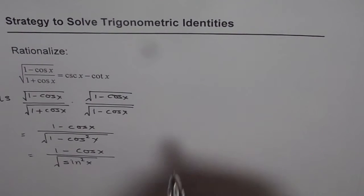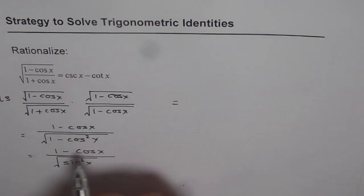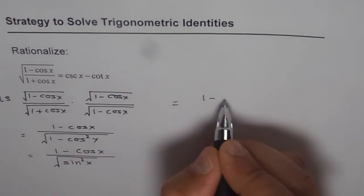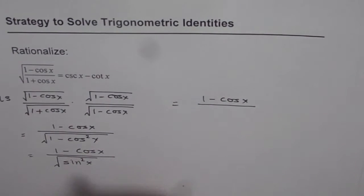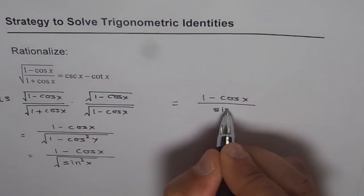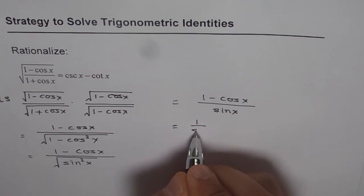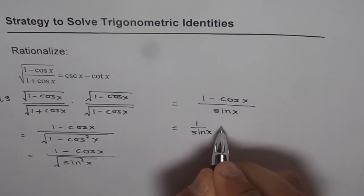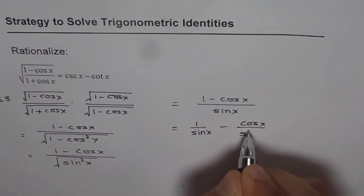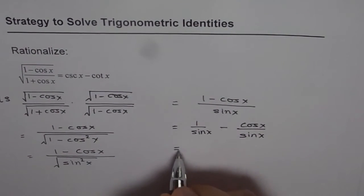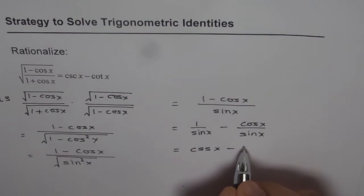Let's continue on this side and see what we get. We get (1 minus cos x) over sine x. Now you can write this as 1 over sine x minus cos x over sine x. And that gives you the right side, which is cosecant x minus cotangent x.